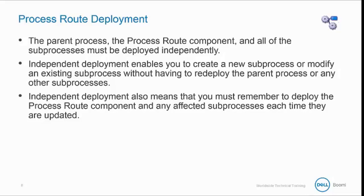However, independent deployment also means that you must remember to deploy the process route component and any affected subprocesses each time they're updated. Deploying the parent process does not deploy the process route and its subprocesses. And because there's no dependency between parent process and subprocess, it is possible to have different versions of the same component being used in different processes.